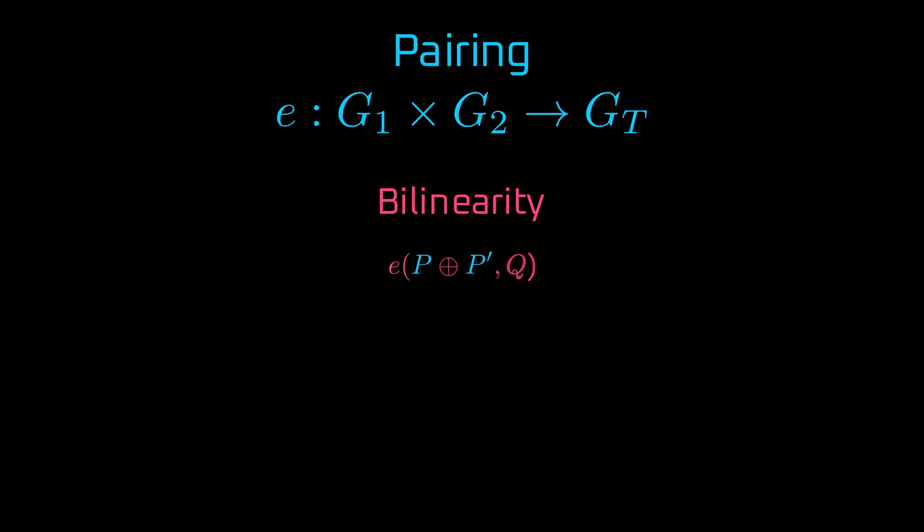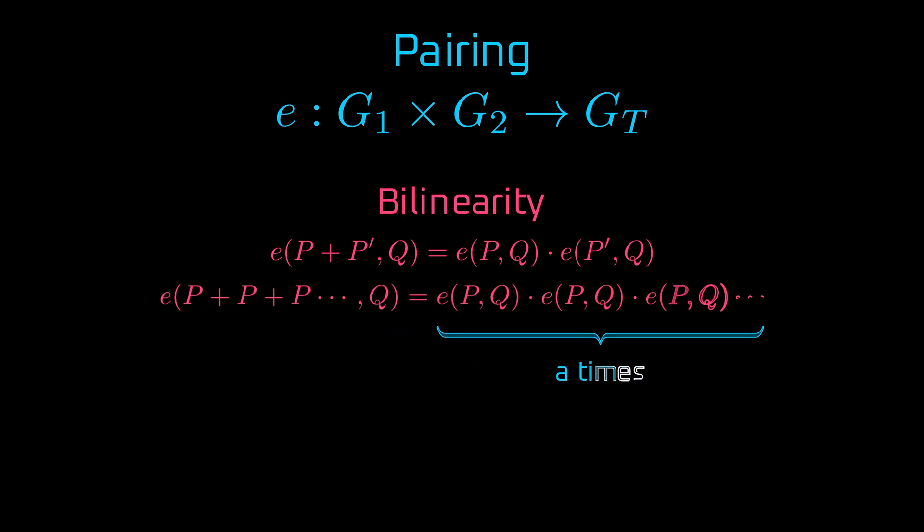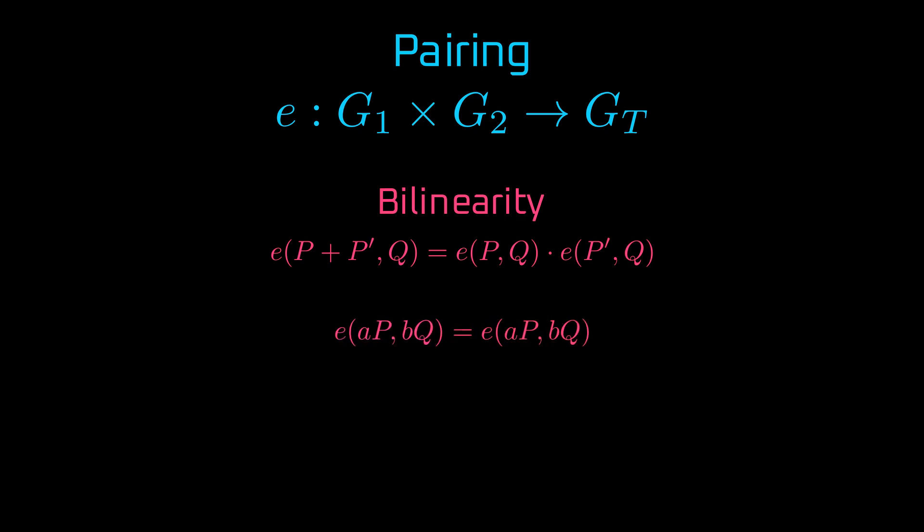First, we say it's bilinear because it satisfies a following condition. If we take group operation of two elements in one of the arguments, we can distribute that into group operation on two pairings. So each component of the original sum will land as an argument in one of the pairings. Note that operations will be different in the argument and in the result of pairing. In arguments we have elliptic curve points, which we will add. The result of pairings are field elements, which we will multiply. Now let's suppose we add the same point in one argument eight times. Via the bilinearity property, we should be able to replace this expression with the multiplication of pairings. So if we have such an operation on pairings where we scale one or both arguments by factor a or b, we can move these factors to the exponent. And as a consequence, the factors can be switched from one argument to another without changing the value of the pairing.